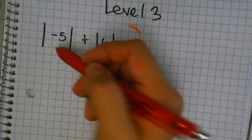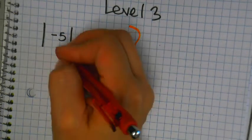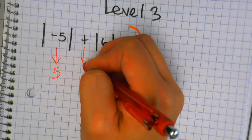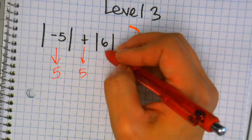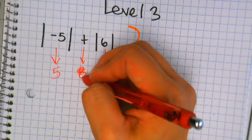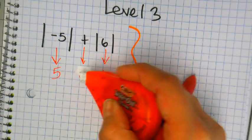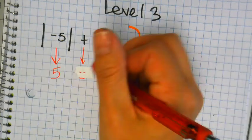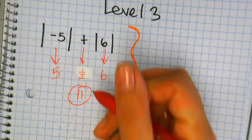What is the absolute value of negative 5? 5. Beautiful. Absolute value of 6? 6. Write it down. It's 11. Positive 11. Just 11.